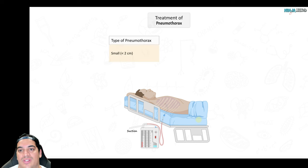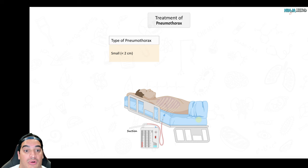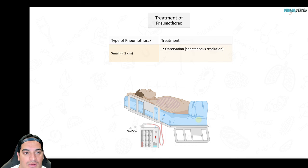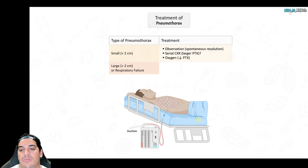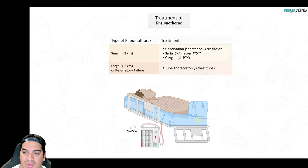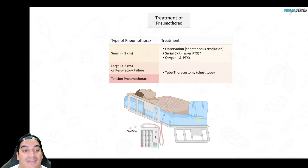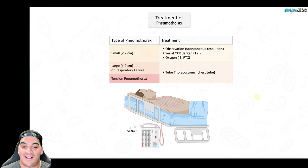If the pneumothorax is greater than 2 cm or the patient shows signs of respiratory failure, insert a chest tube at the 4th intercostal space, anterior-axillary line. If tension pneumothorax develops, immediate needle decompression followed by chest tube insertion is required.